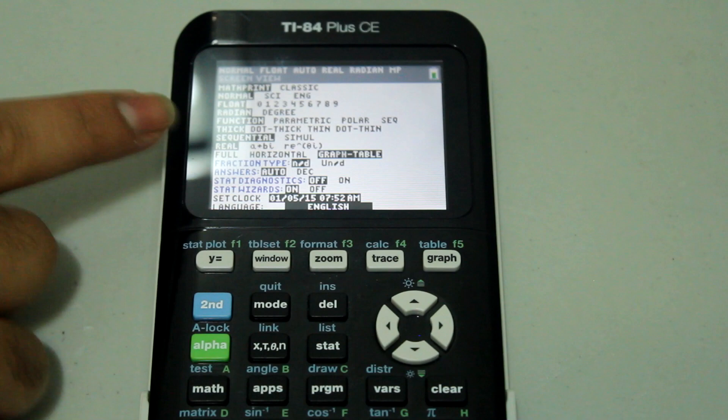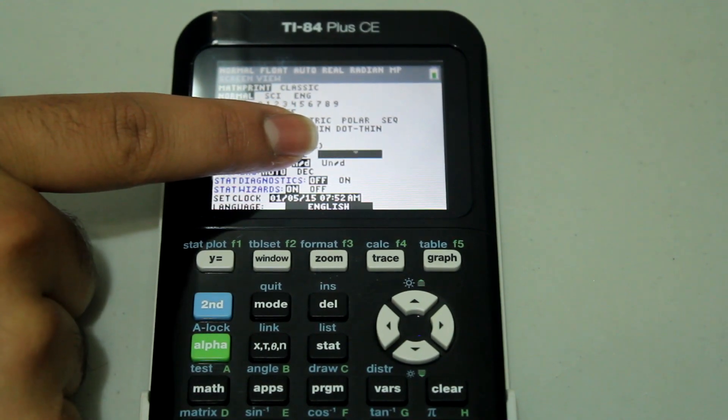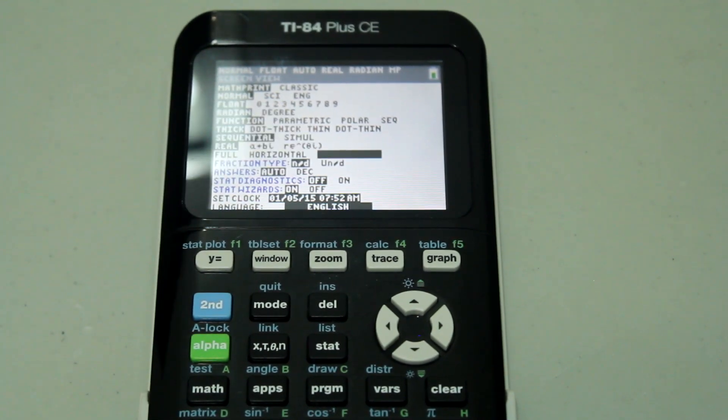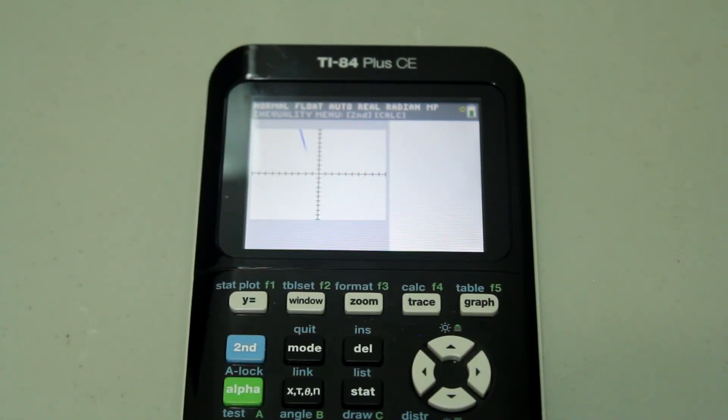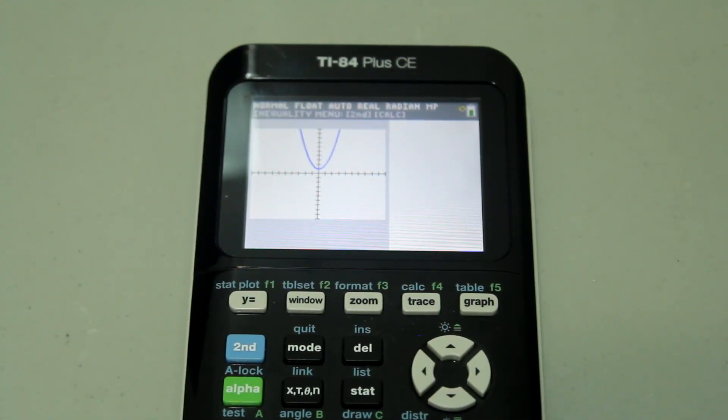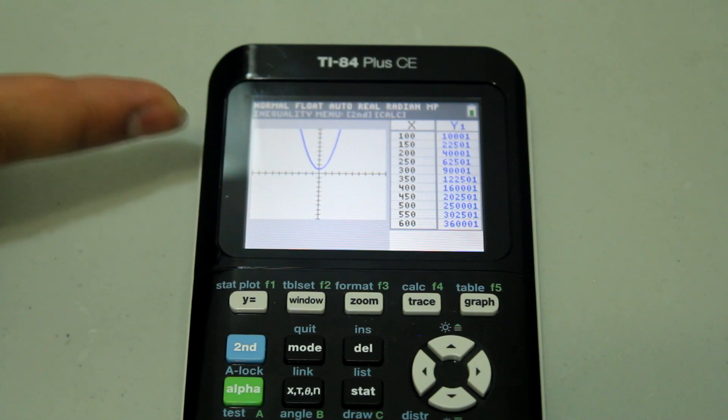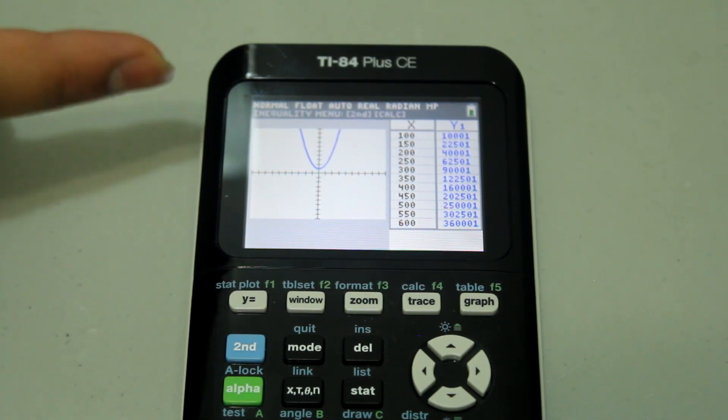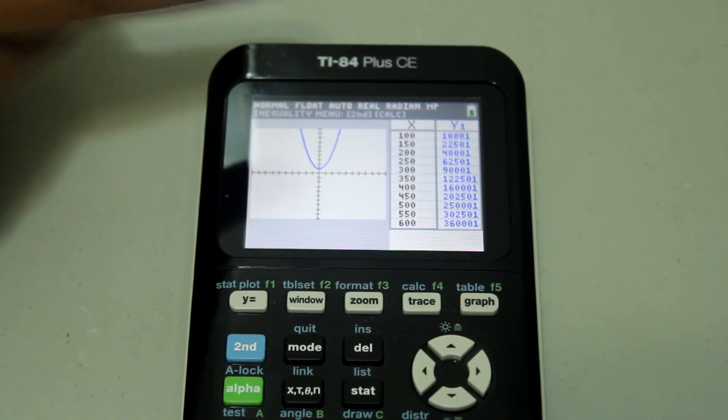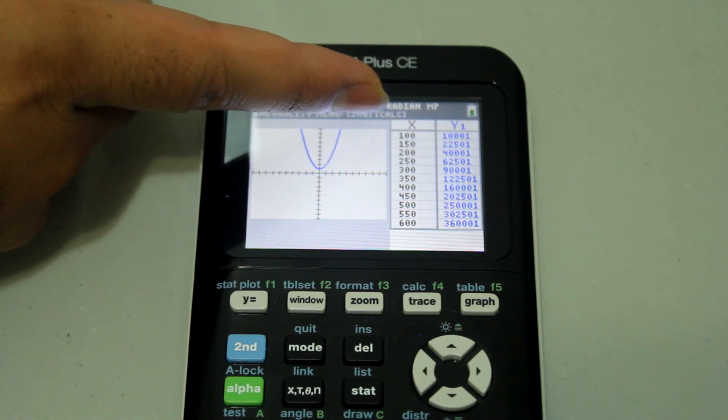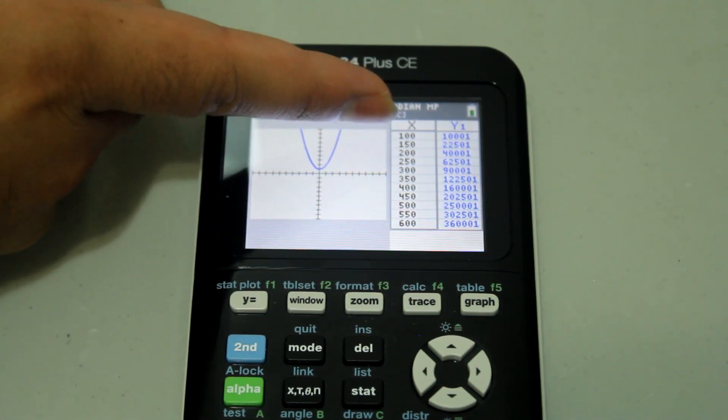Then that graph-table should be highlighted in black. Now if I hit graph, I get the table and the graph side by side. Notice that my table starts at 100.